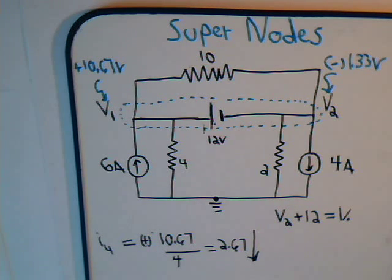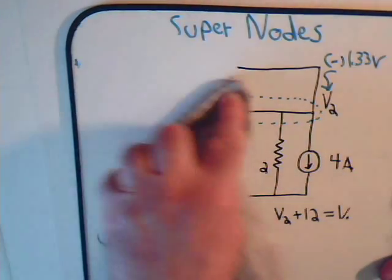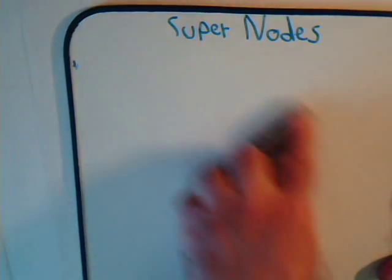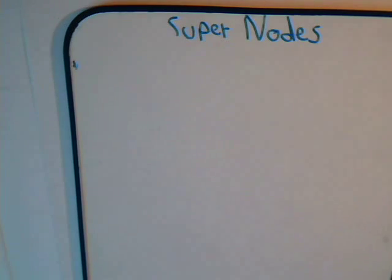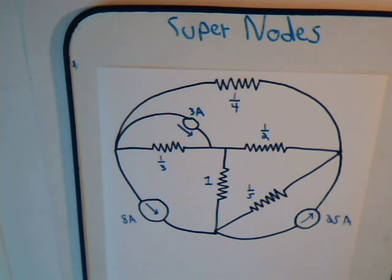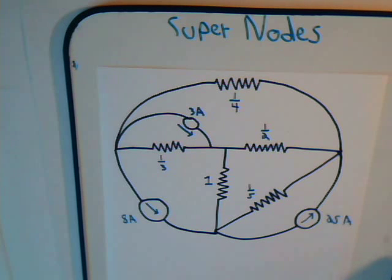So that's it — we solved the problem. This has been an introduction to the supernode technique. In the next video we'll look at another illustration of using supernodes: we'll start with a circuit, set up the equations for the node voltages, then replace a resistor with a voltage source and analyze the circuit after that modification. Come back and join us for that video.